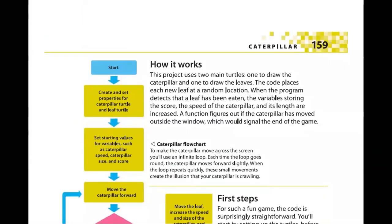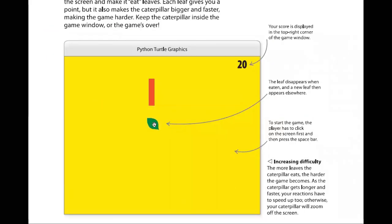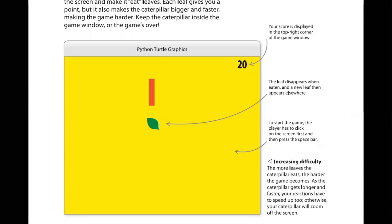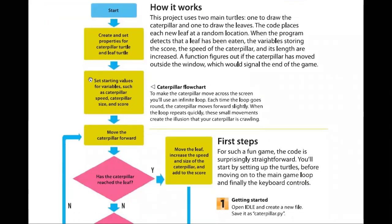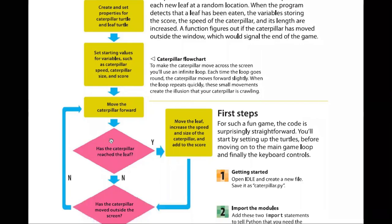The first step in the flowchart is to create the properties of the caterpillar and the leaf. By properties, I mean the shape, color, and variables like length. The caterpillar's length should keep increasing, so we need a variable for it. The leaf should look like a leaf — we've tried to draw it with specific points — though you can use a simple square or circle if you prefer. Once that is done, set values into variables: speed of caterpillar, size, score, new locations — all variables used in the game.